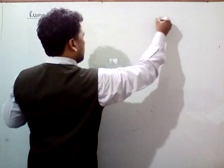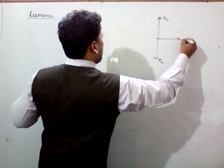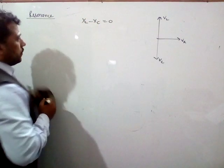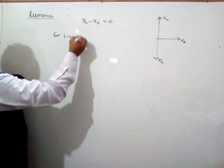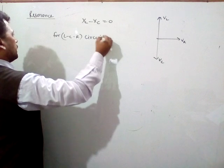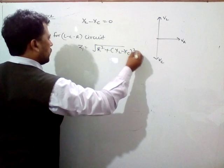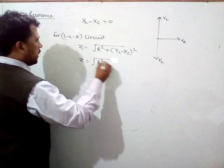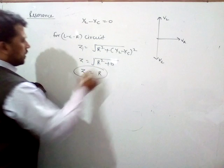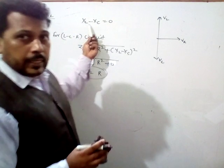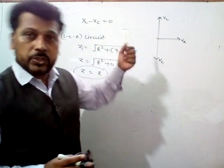Resonance is a specific condition in the LCR circuit — where VL, VC, and VR are present — whenever XL minus XC becomes zero. For the LCR circuit, Z equals the square root of R squared plus (XL minus XC) squared. So when XL minus XC equals zero, Z becomes equal to R. This is the specific condition whenever the difference of inductive reactance and capacitive reactance becomes zero.